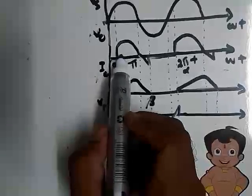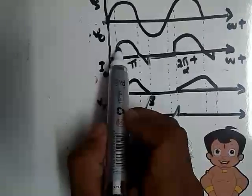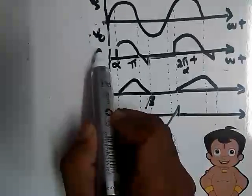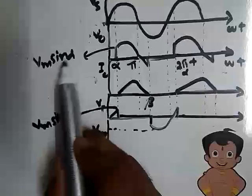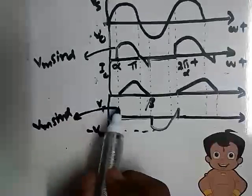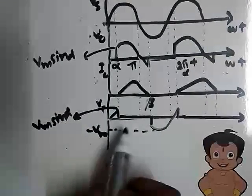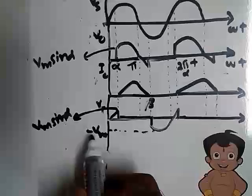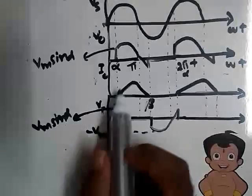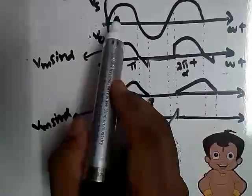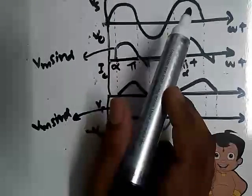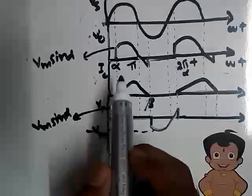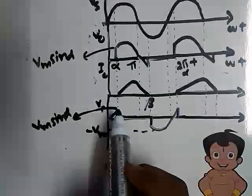Now we have to mark some magnitudes on these waveforms. At the point α it will be Vm sin(α), and at the corresponding point also Vm sin(α). The maximum negative voltage applied will be −Vm. Since the Vt waveform follows a similar shape to the supply voltage, the values are also similar.